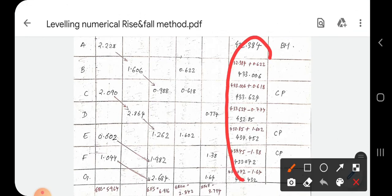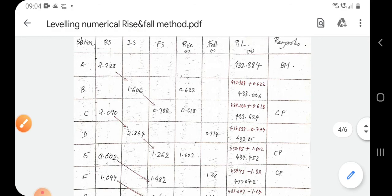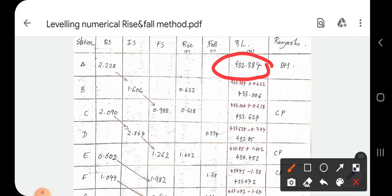The benchmark reduced level is 432.384 meters. Point A is 432.384 meters. This is 0.384 meters above the datum.